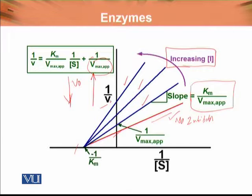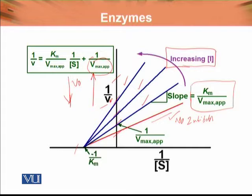This is the intercept of Vmax represented on the plot. With a little inhibitor, apparent Vmax is slightly reduced. With more inhibitor, Vmax is further reduced. So there are different intercepts on the 1 over V axis. However, there is no change in the KM value.